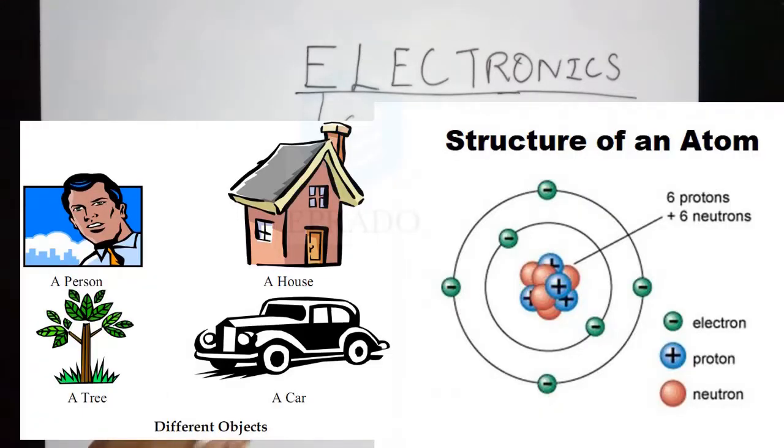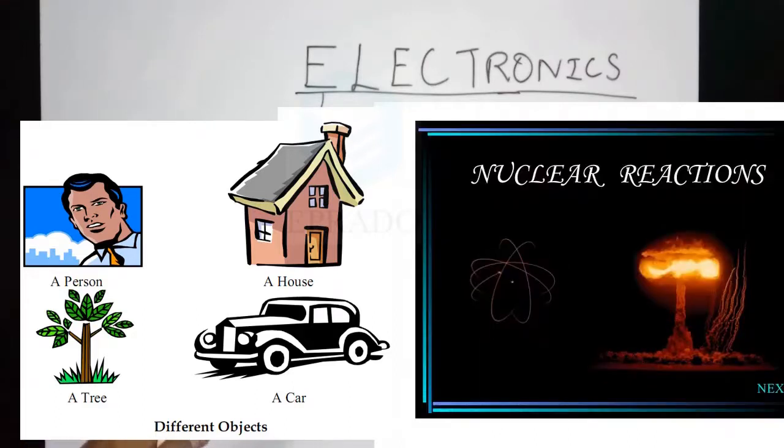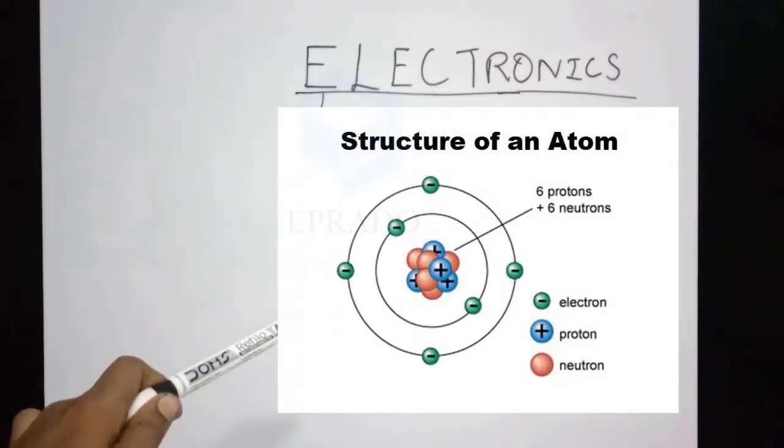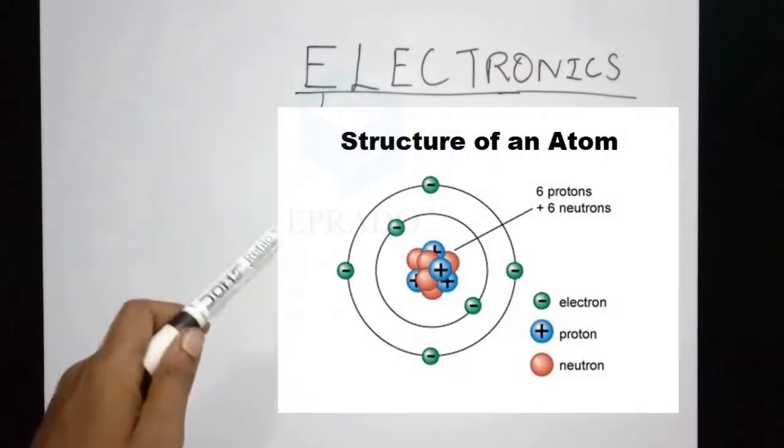All the objects around us are made up of atoms. Atoms are the tiniest particles that cannot be broken anymore. But due to advancements in technology, we can now break the atoms. That is called nuclear reaction. So let us learn what is inside the atom.